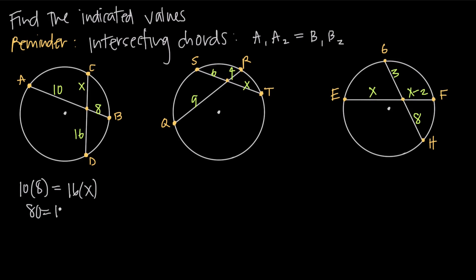So we get 80 is equal to 16x. If we divide both sides by 16, we get x is equal to 5. And we can go ahead and say that the length of this segment here from C to the intersection point is 5. So that's the unique relationship that we have between intersecting chords within a circle.